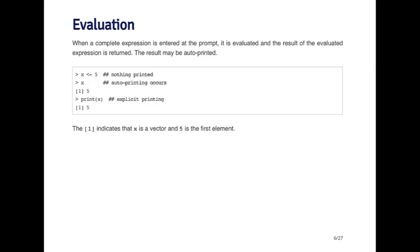You'll notice that when I print out the object x, there's a little 1 in brackets here. And you might be wondering what that is. All that indicates is it's telling you what element of the vector is being shown. This will make more sense when we have longer vectors to look at. But all this is saying is that the number 5 that you're seeing there is the first element of the vector.